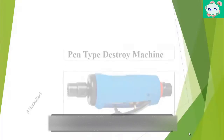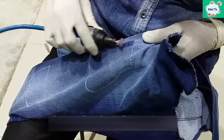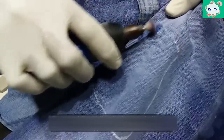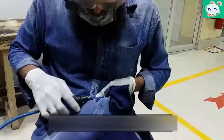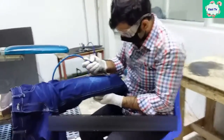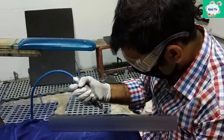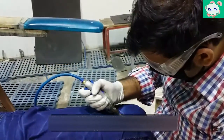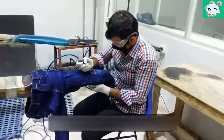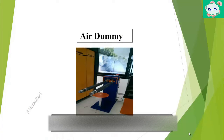Pen type destroy machine: this machine is used to destroy the garments. This machine is operated by a pneumatic system or electric signal. One stone is attached with the machine at the front side. When this stone moves with high speed on the specific area of the garment, it damages that specific area.